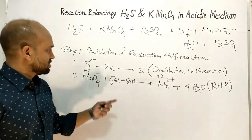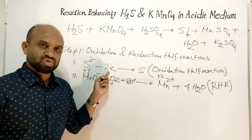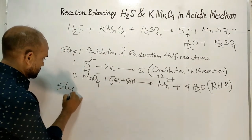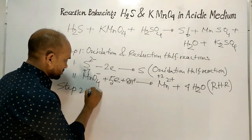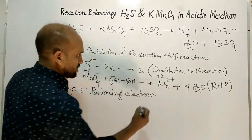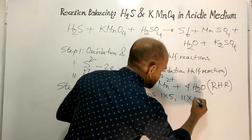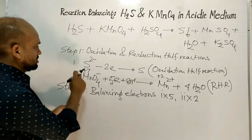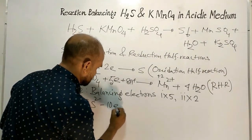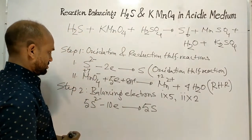Step two: equalize the number of electrons. In equation one there are two electrons, and in equation two there are five electrons. To balance, equation one is multiplied by five and equation two is multiplied by two. This gives equation three: five sulfide ions minus ten electrons yields five sulfur atoms.